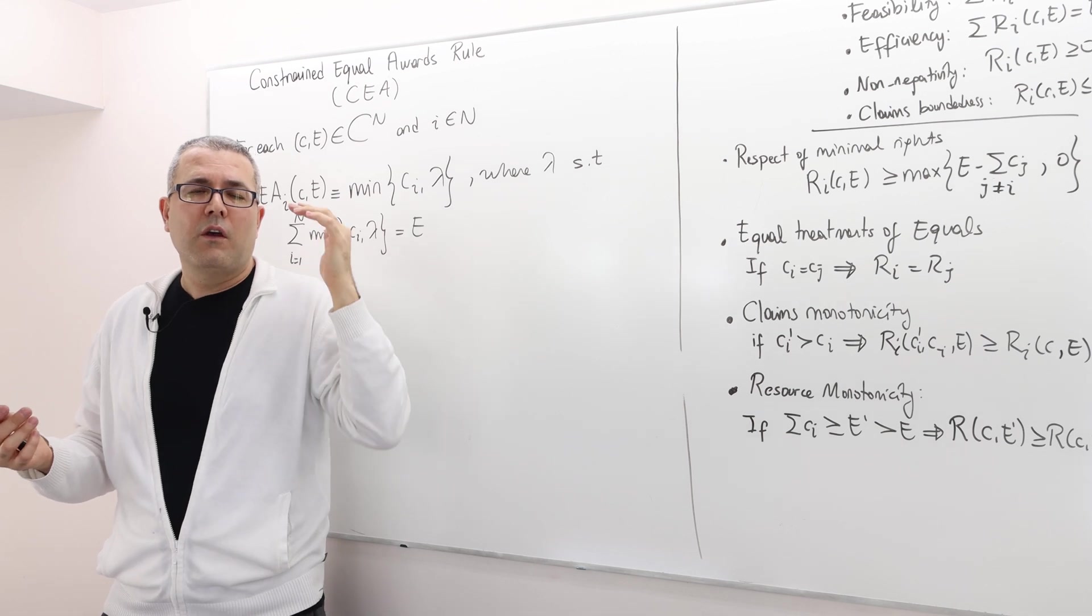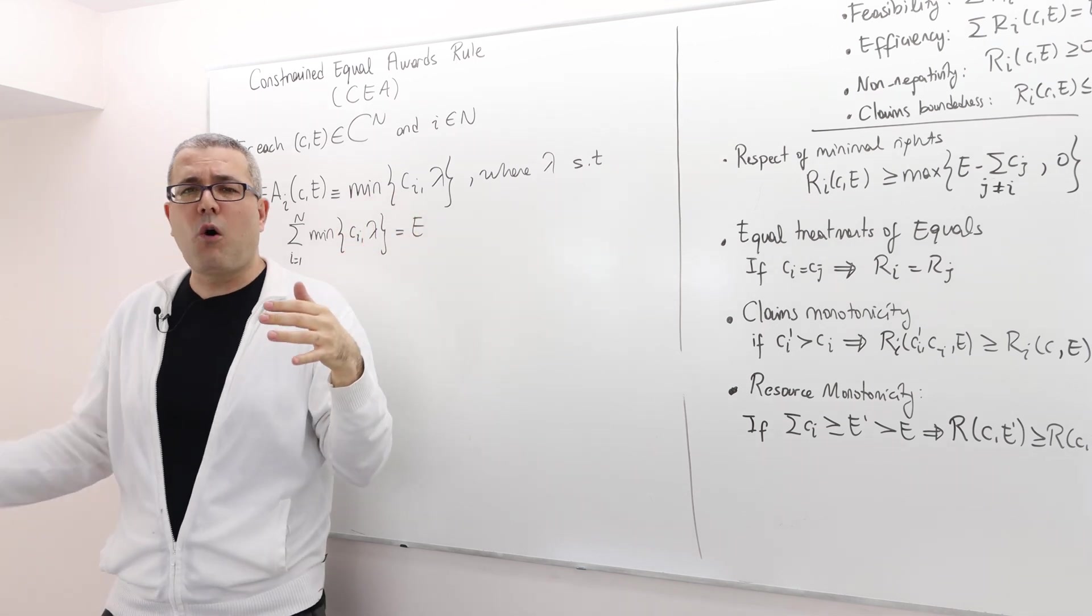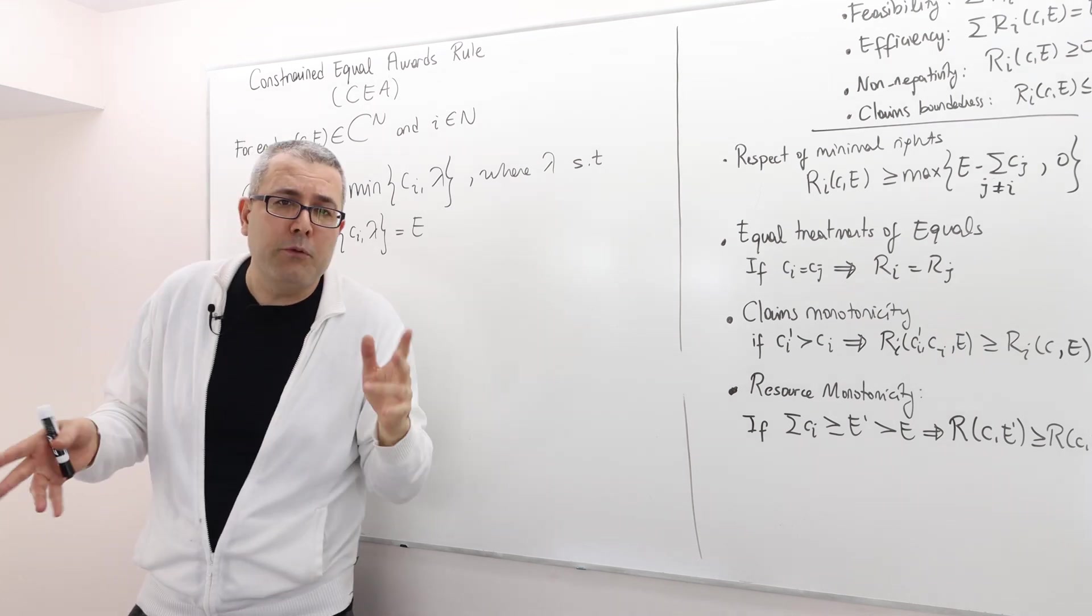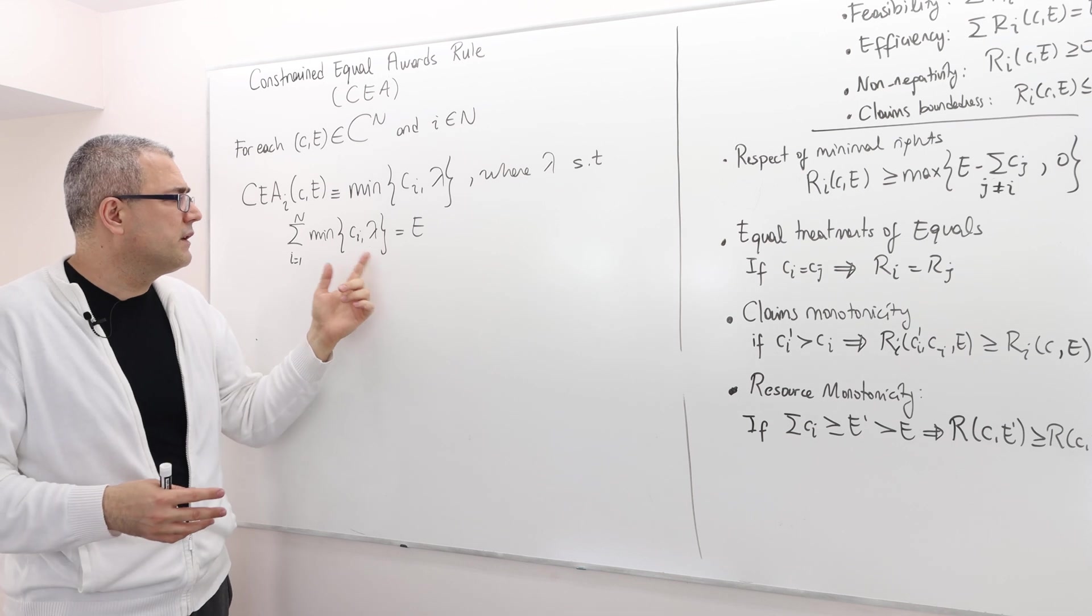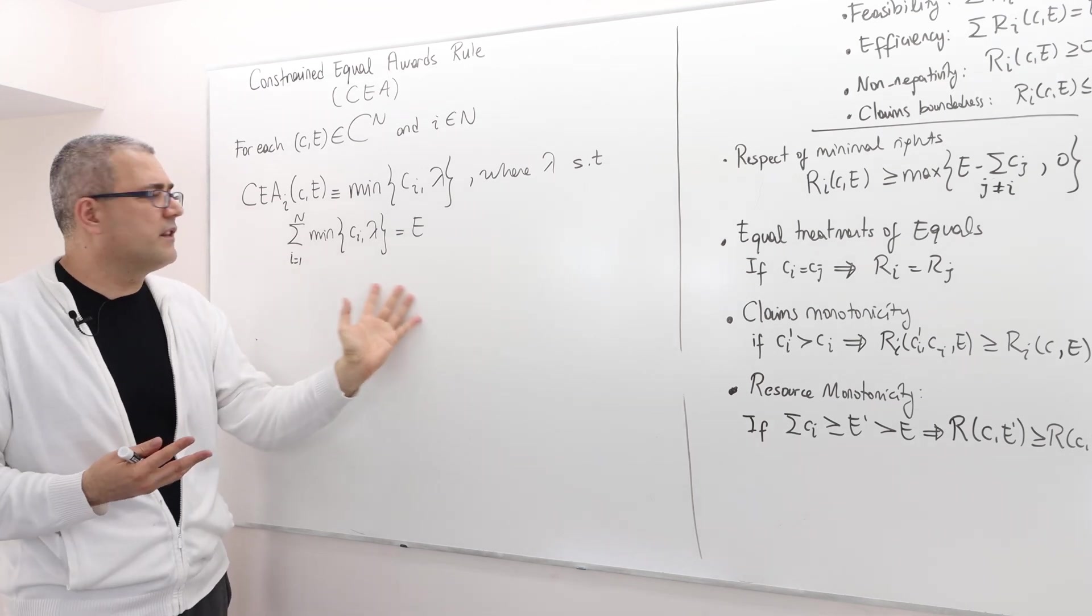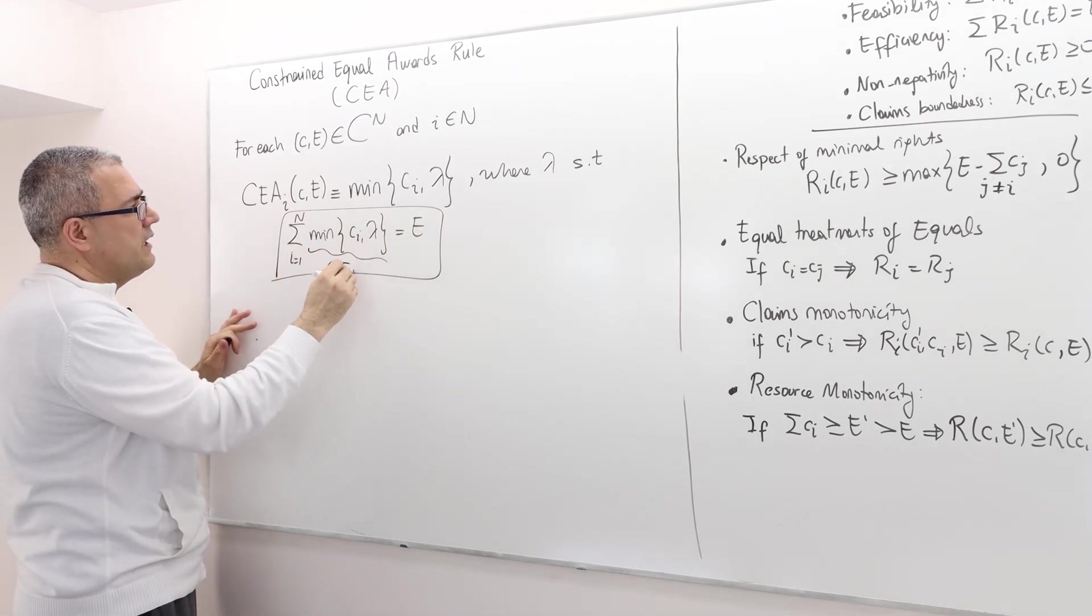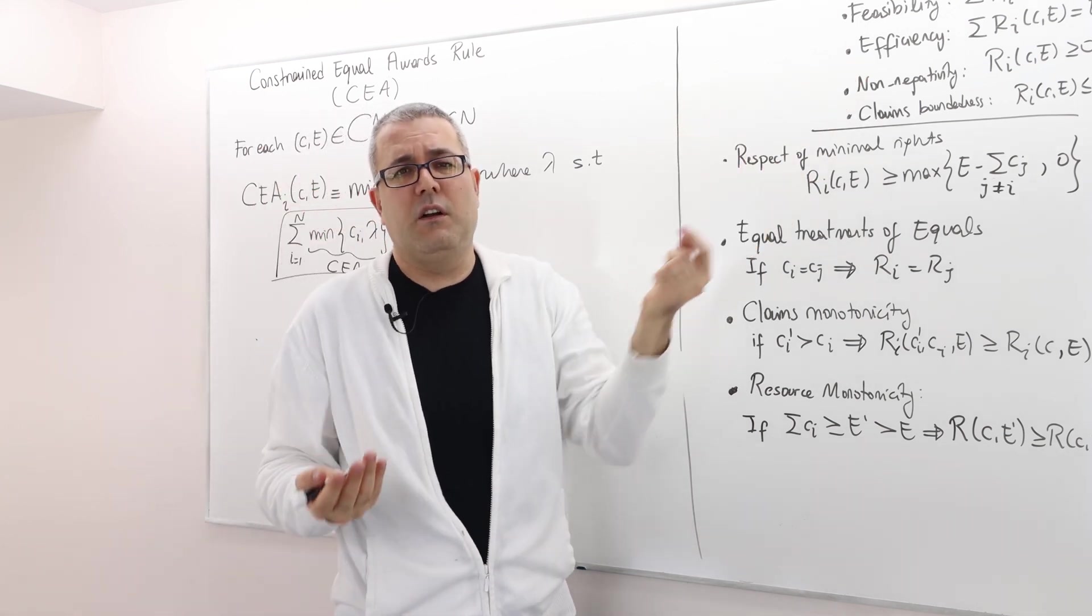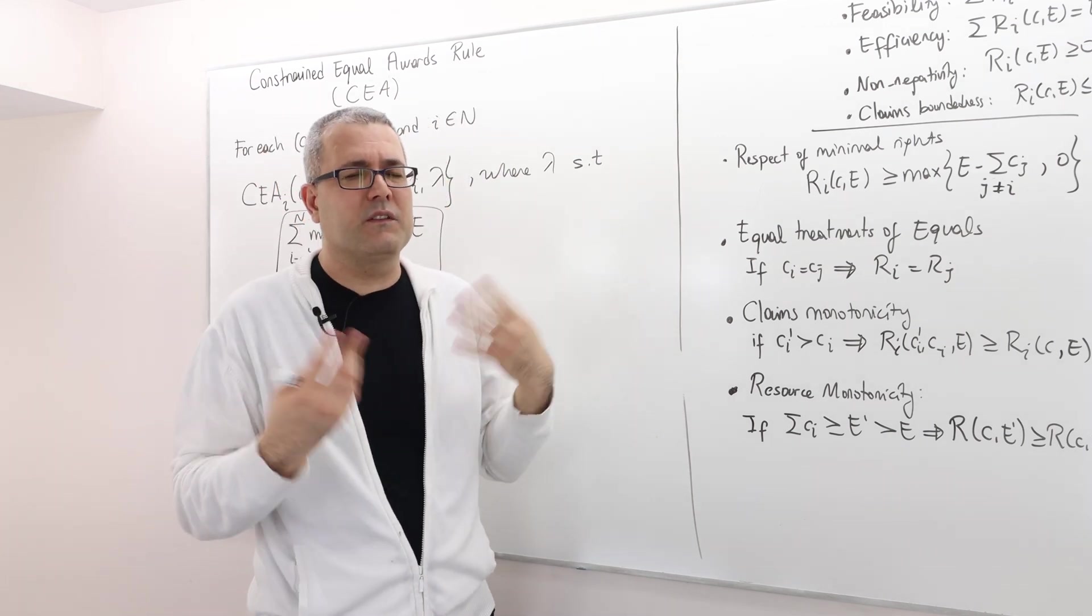Those with high claims, I treat all of them equally and give them lambda. For all those who have small claims, I just give them whatever they claim. How do I determine what claim is big and what claim is small? This is endogenously determined by this lambda term, which has to satisfy the efficiency condition. Lambda has to be such that the rule is efficient. You cannot just make any lambda because otherwise the rule is not going to be efficient.